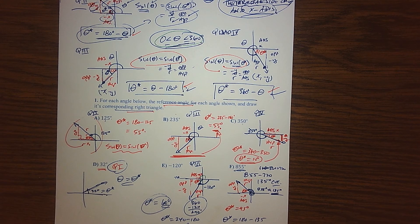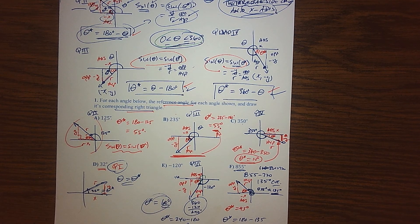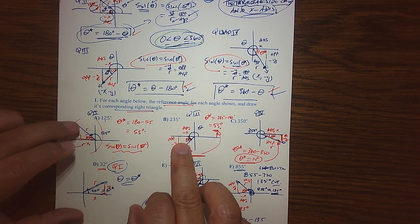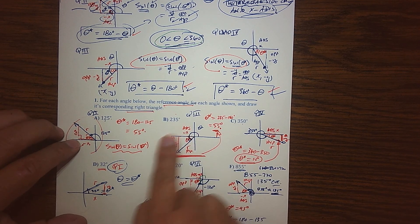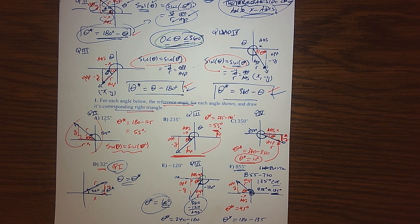Hopefully that gets you thinking about reference angles. When you guys are using the right triangle definition, please make sure you're drawing a corresponding right triangle — representative right triangle with positive x, positive y, and r. That's going to help you with all the ratios you need to find the trig values. We're actually going to see that in the next video, so I'll see you guys then.